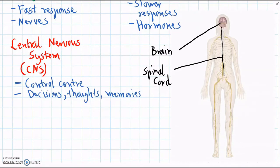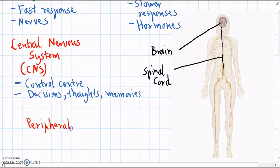The other part of the nervous system is called the peripheral nervous system, or PNS.